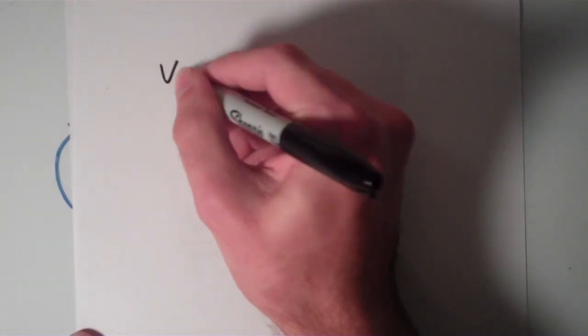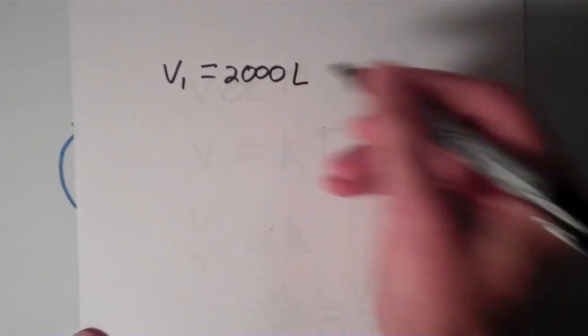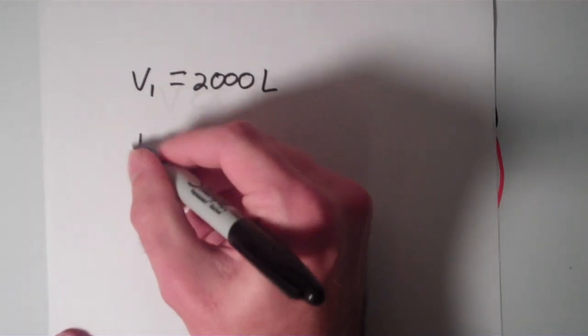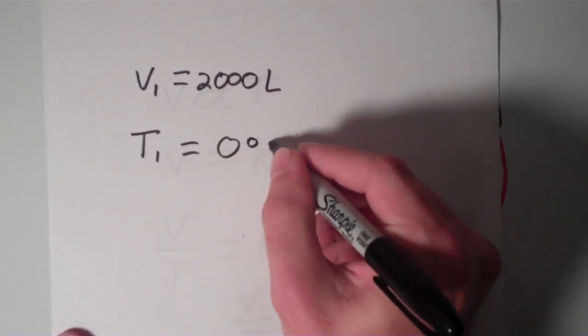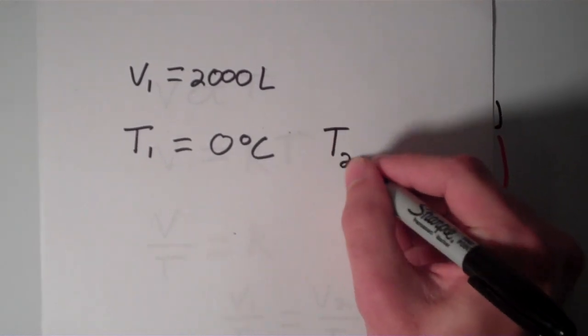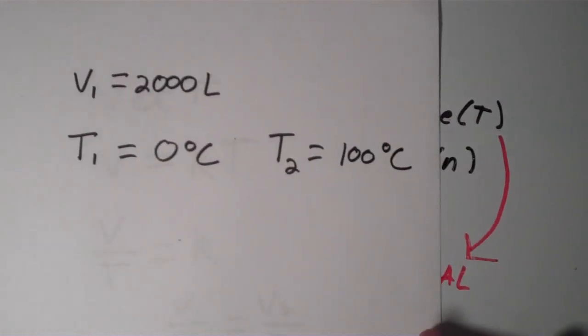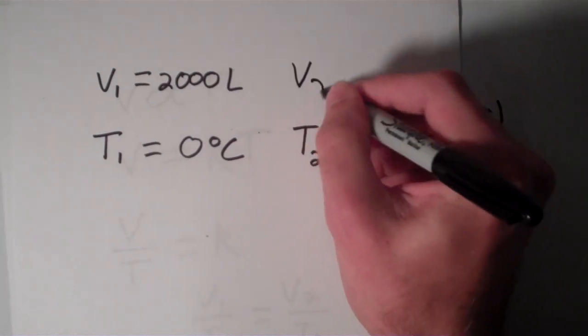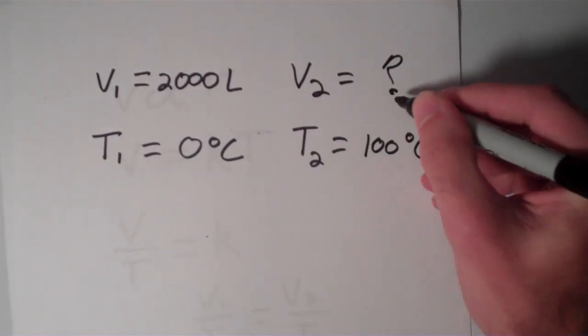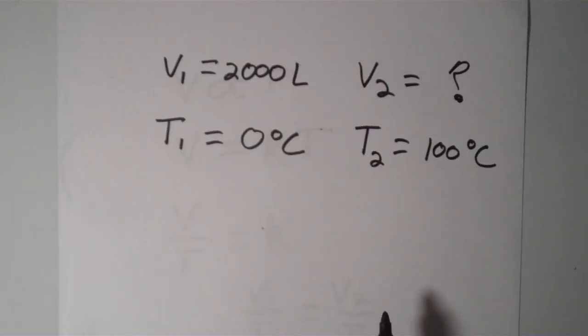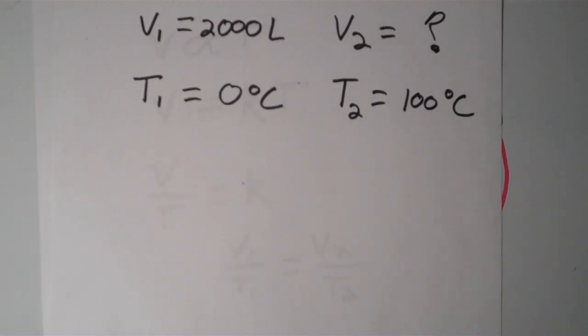So suppose you have a gas, and this gas is occupying 2,000 liters, so I'm going to put V1 equals 2,000 liters. And suppose the temperature of this gas, when it's 2,000 liters, is 0 degrees Celsius. So if I were to increase the temperature of this gas to 100 degrees Celsius, so if I were to increase the temperature, T2 equals 100 degrees Celsius, so it goes from 0 to 100, then what would be the volume of the new gas? So how much is this, to what volume is this gas going to expand if I increase the temperature from 0 degrees Celsius to 100 degrees Celsius?